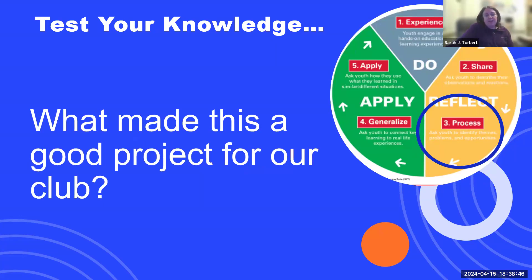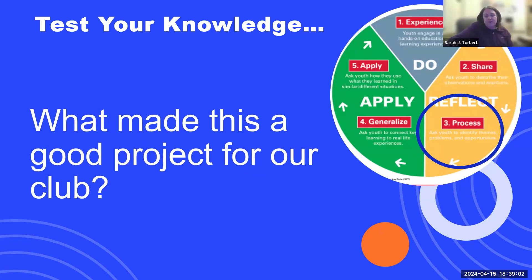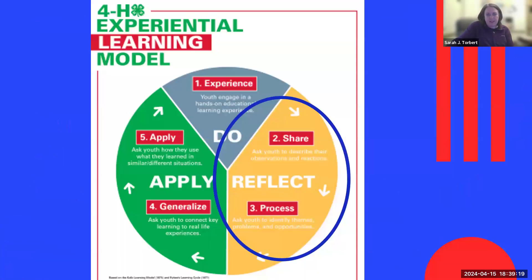'What made this a good project for our 4-H club?' — that's talking about the generalization and themes of what made it a good way to work together. Once again, we do a really good job of doing, and the generalize and apply is much harder. So if we can at least start sharing and reflecting, that would be great.